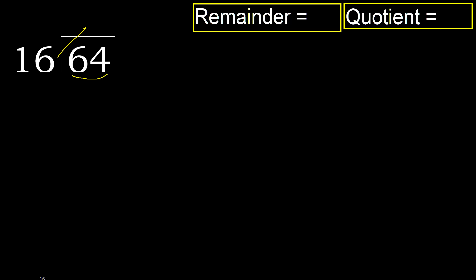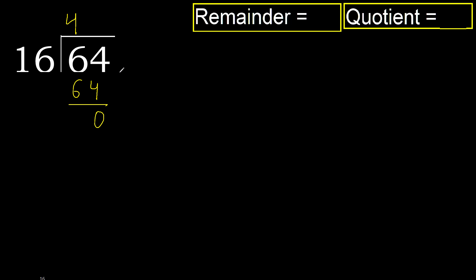16 multiplied by which number is nearest to 64 but not greater? 16 multiplied by 5 is greater, so multiply by 4. 64 is not greater, subtract — 0.